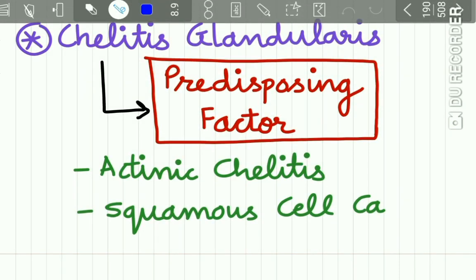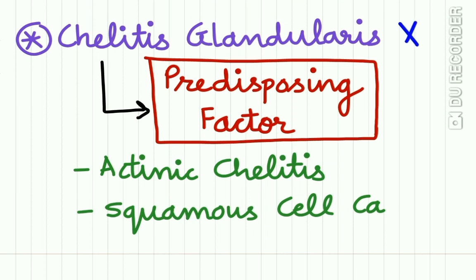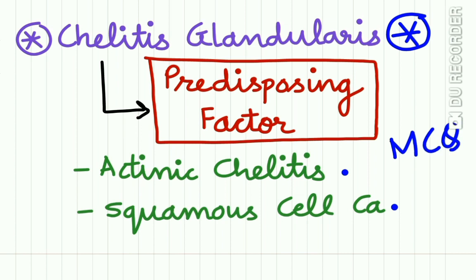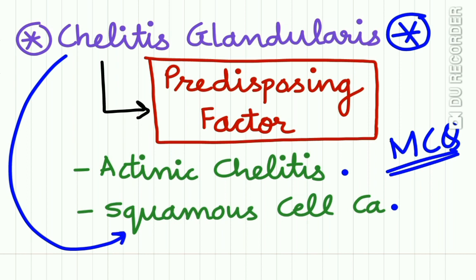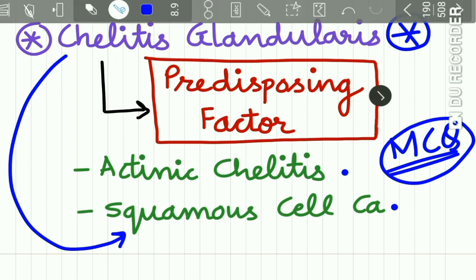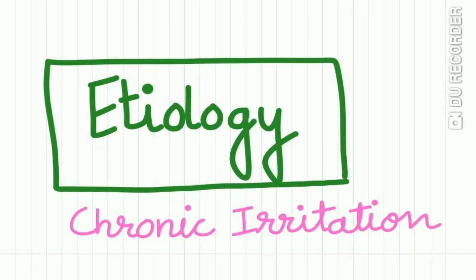An important point to remember is that Cheilitis Glandularis is a predisposing factor for actinic cheilitis and squamous cell carcinoma. Cheilitis Glandularis has a tendency to convert into squamous cell carcinoma — you will surely be asked a question on this in exams.